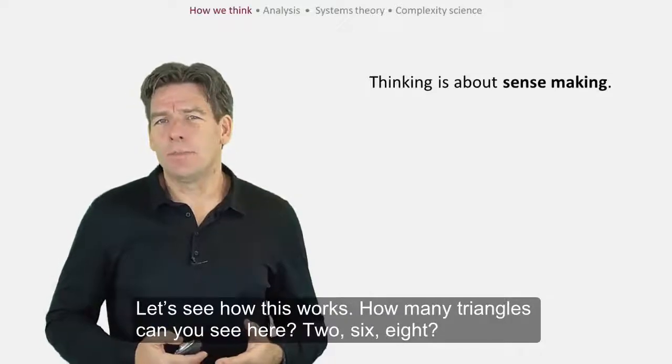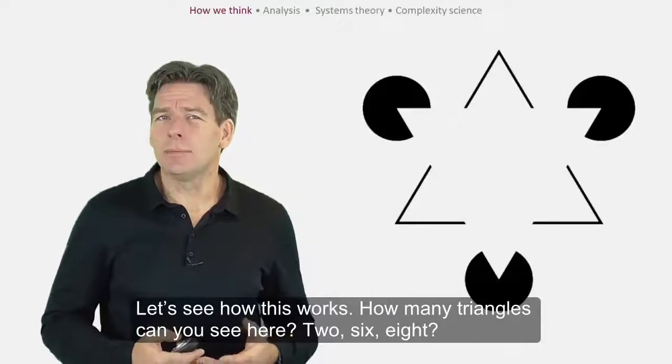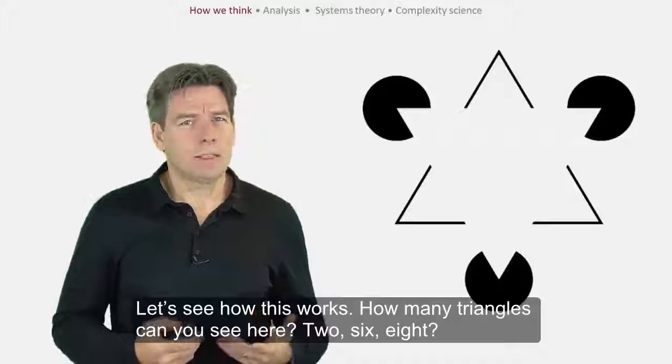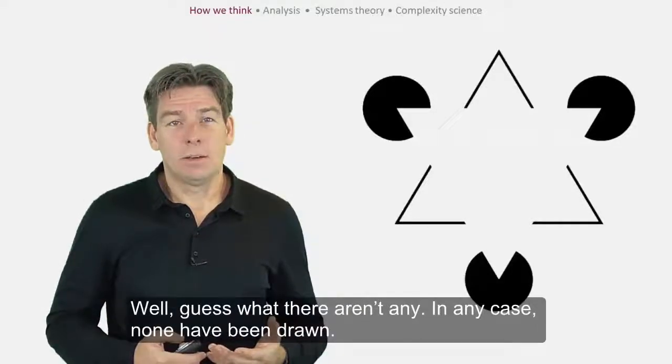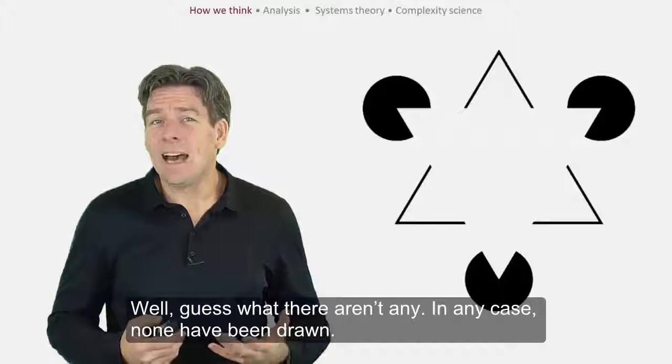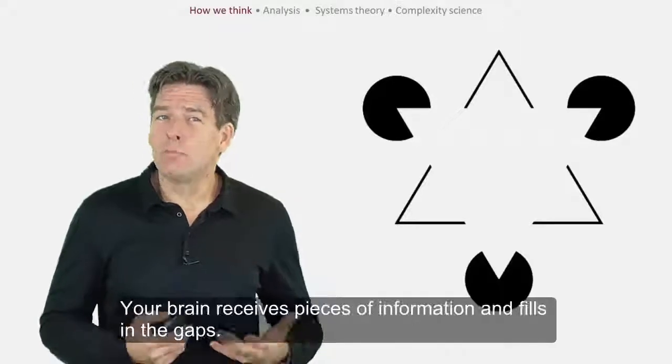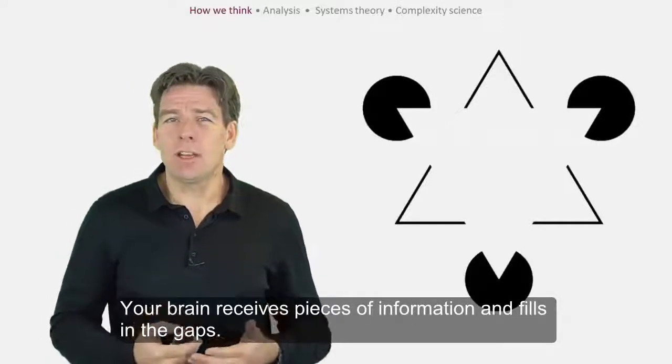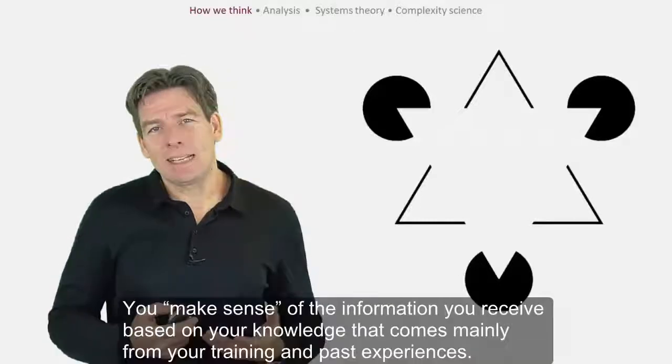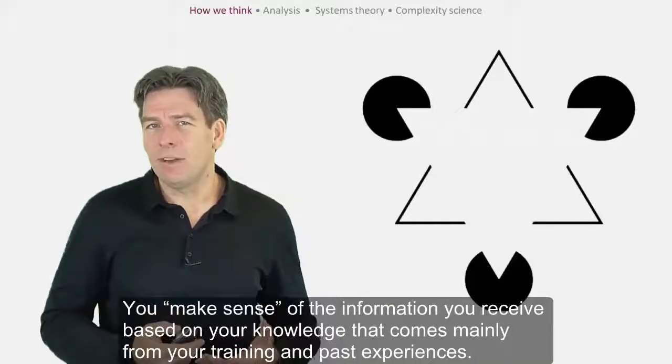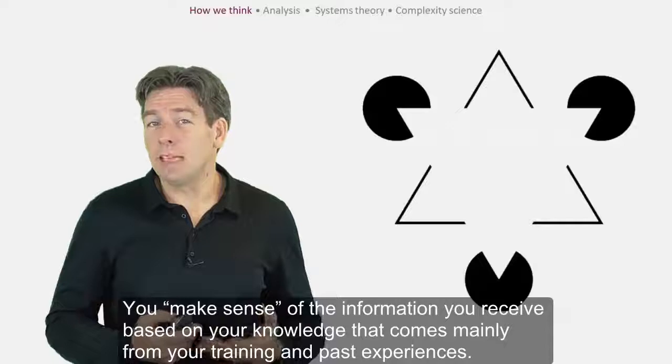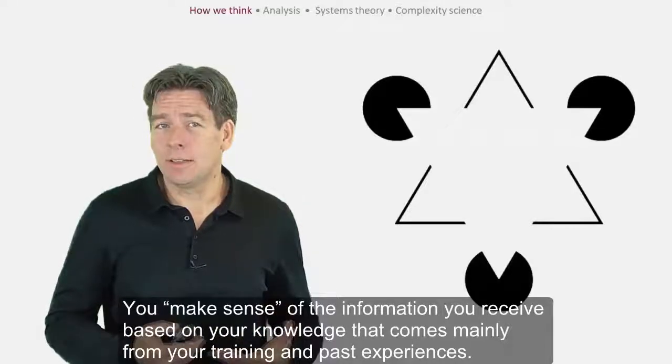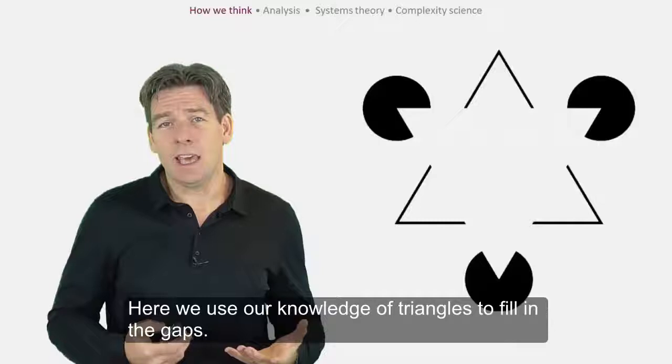Let's see how this works. How many triangles can you see here? Two? Six? Eight? Well, guess what? There aren't any. In any case, none have been drawn. Your brain receives pieces of information and fills in the gaps. You make sense of the information you receive based on your knowledge that comes mainly from your training and past experiences. Here we use our knowledge of triangles to fill in the gaps.